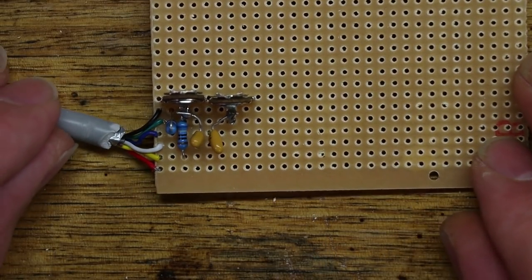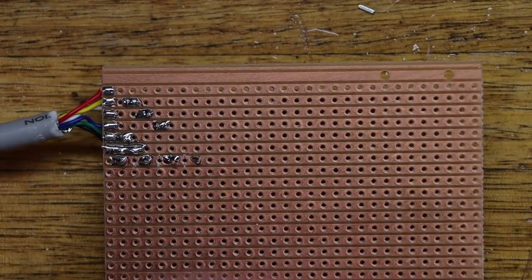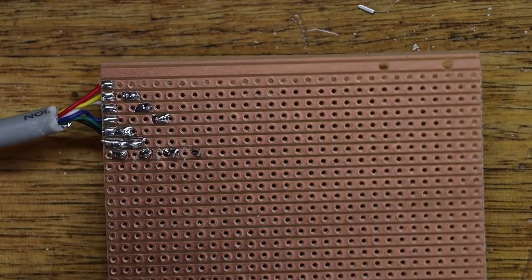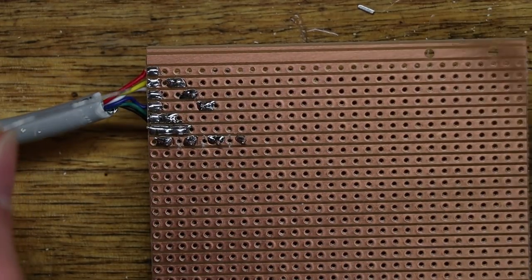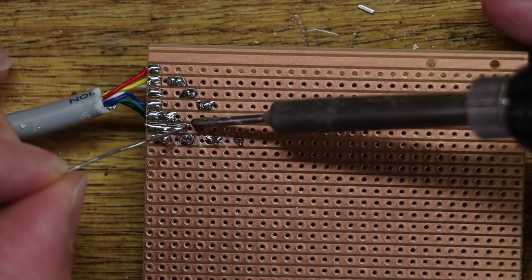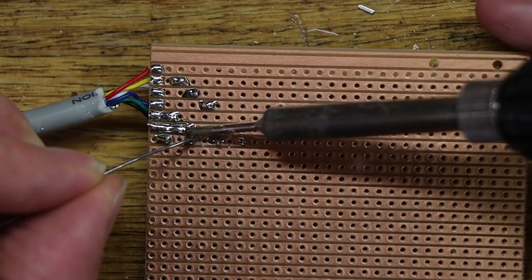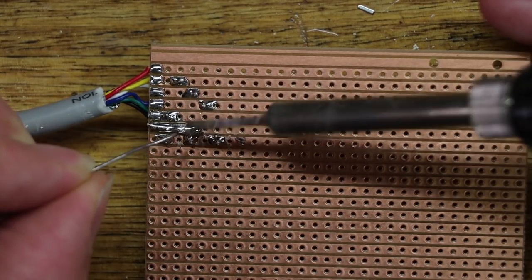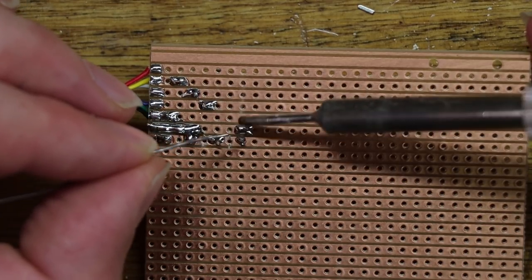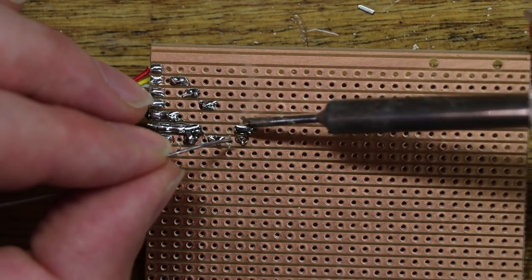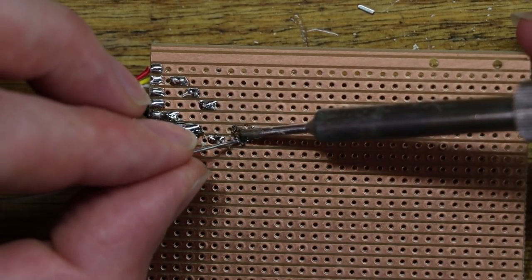Right, trim that off. Right, and that bit's done. The last thing we want to do is from one leg of each of the trim pots we want to join back to the ground line, so we just want to do that with a bit of a solder bridge, that's all. Which can be easier said than done sometimes, and it doesn't really matter which one as long as it's only one of each trim pot.